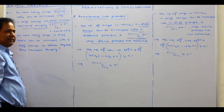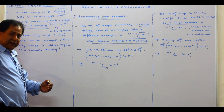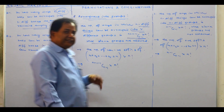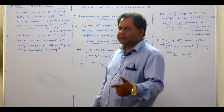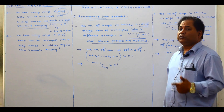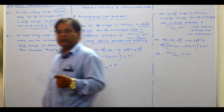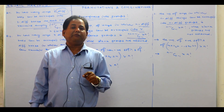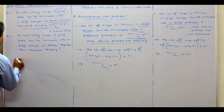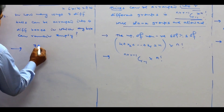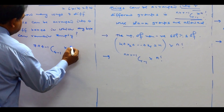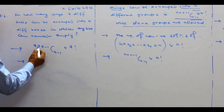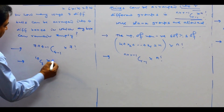In how many ways can seven different balls be arranged into four different boxes, where any box can remain empty? That means blank groups are allowed, so we find the number of non-negative solutions: (7+4−1)C(4−1) = 10C3, multiplied by 7 factorial.